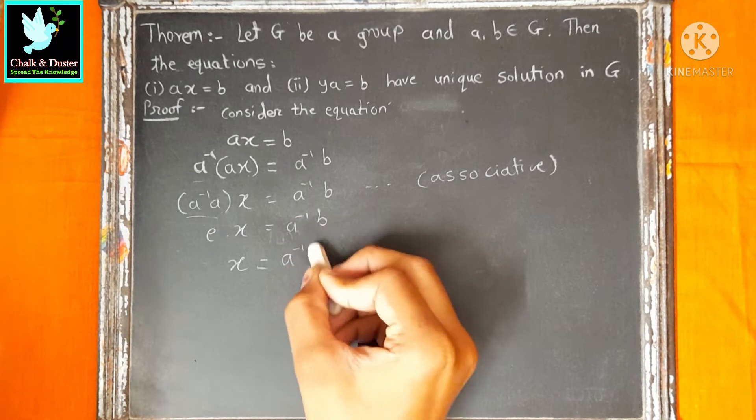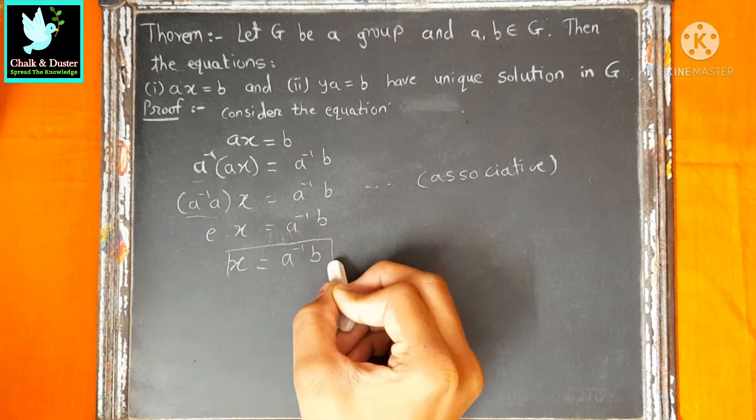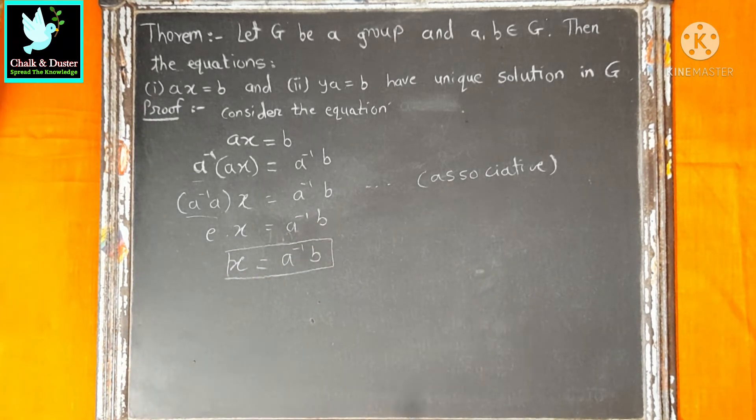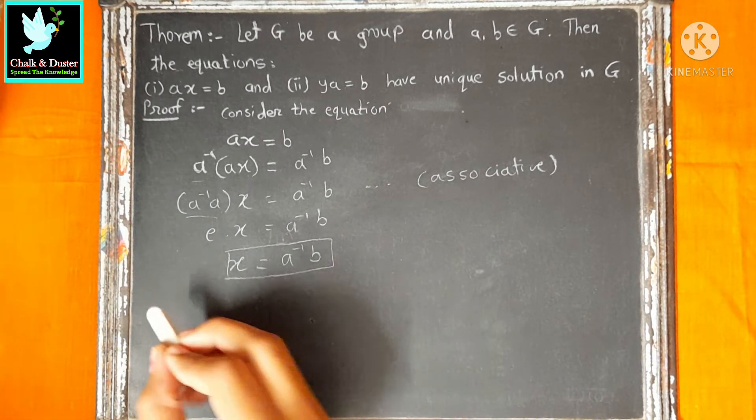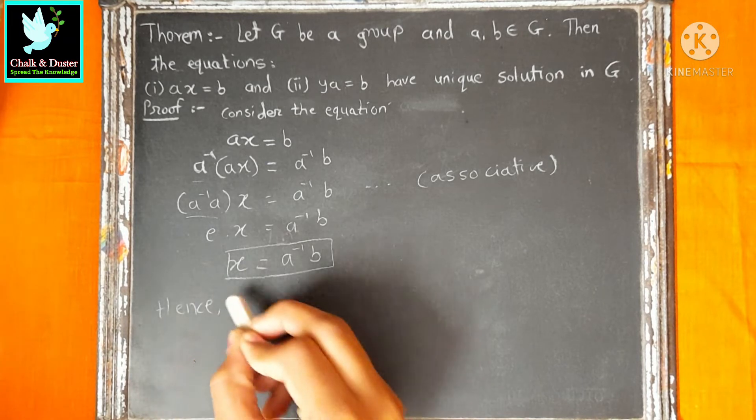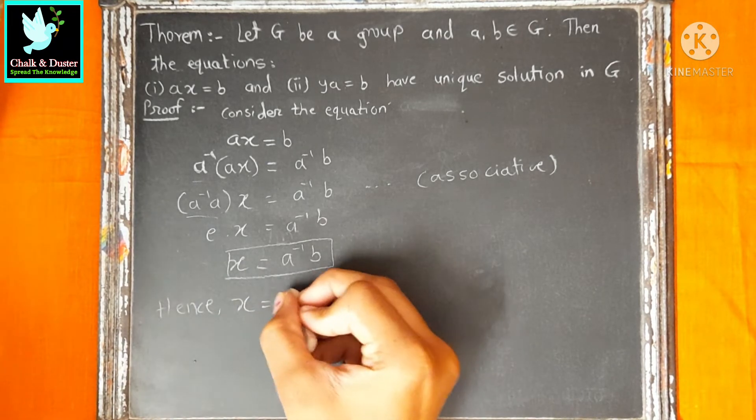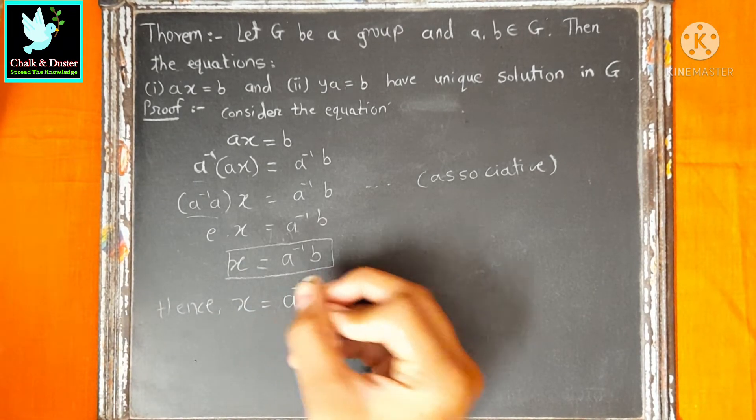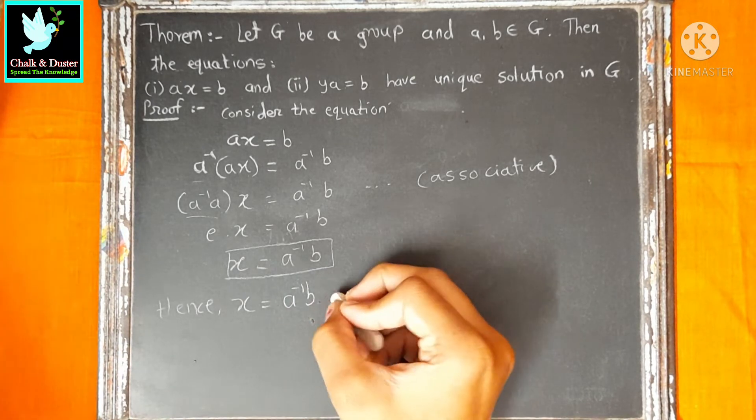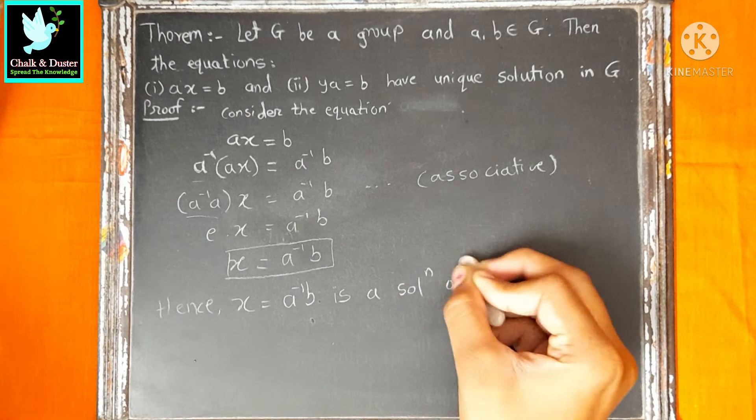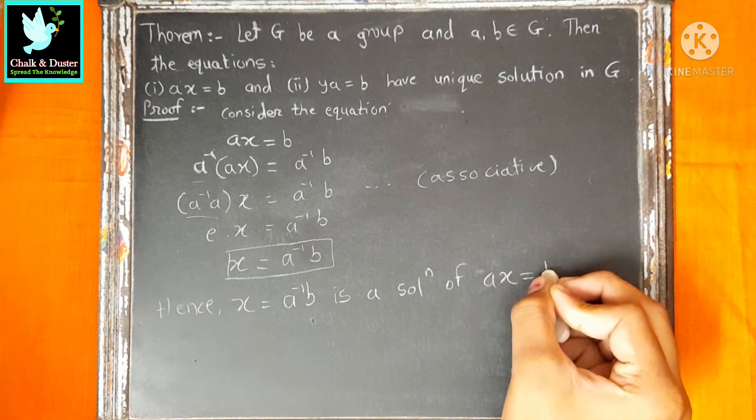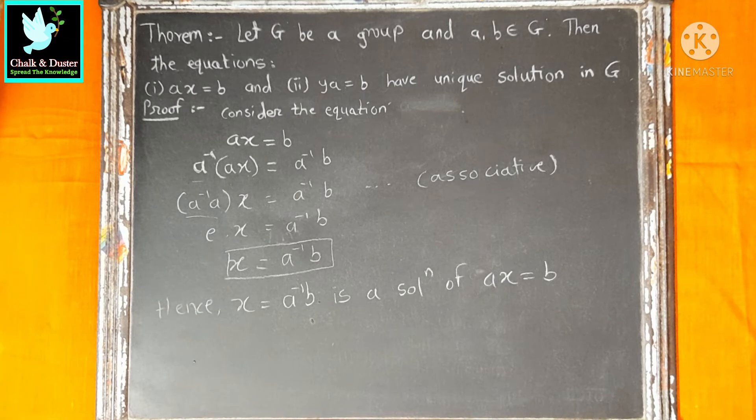So, X value is A inverse into B. Therefore, A inverse into B is a solution of AX equal to B. This is a solution.